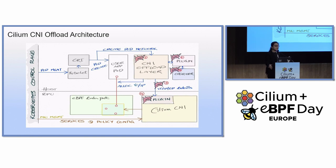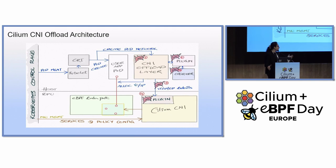As soon as your pod gets deployed, CRI will call the CNI agent in the normal fashion, but this connection will be intercepted by the CNI offload layer. Our CNI offload layer takes all the data from the CRI connection and allocates one interface to the user application pod. It then sends all the data to the interface allocated to the plugin on the DPU. This plugin sends all the data to your Cilium CNI in the same fashion that CRI does. After receiving the data, CNI behaves normally — allocating the other side of that connection to your eBPF data path and attaching it. The connection between the application pod and the eBPF data path is via a virtual function pair.